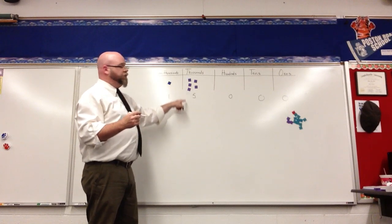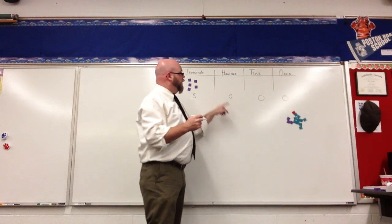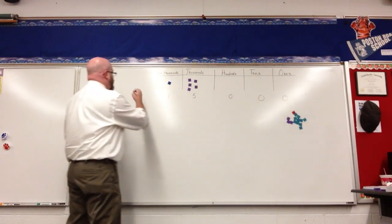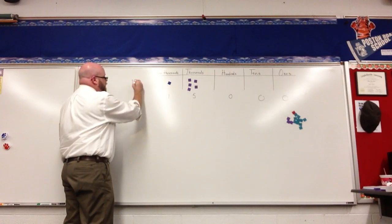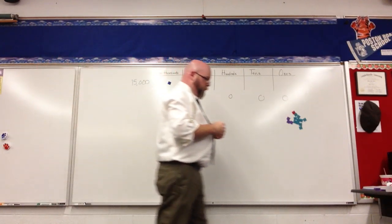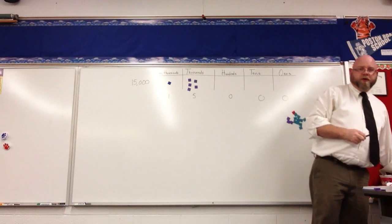One ten thousand, five thousands, zero hundreds, zero tens, zero ones. And this number is fifteen thousand. That's pretty straightforward.